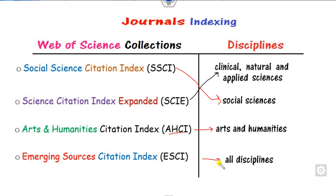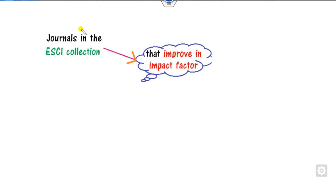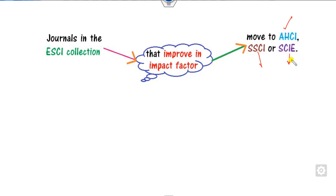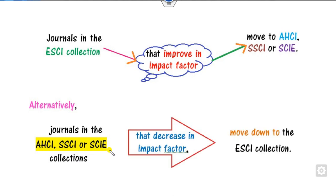If you are working in engineering, you look for SCI index journals. If you are working in social science or humanities, you look for AHCI and SSCI. If you are working on multidisciplinary topics, you look at Emerging SCI index journals. Previously, up to June 2022, articles indexed in Emerging SCI could improve their impact factors and move to AHCI, SSCI, or SCI. Conversely, journals already in AHCI, SSCI, or SCIE could move down to Emerging SCI if their impact factor decreased.